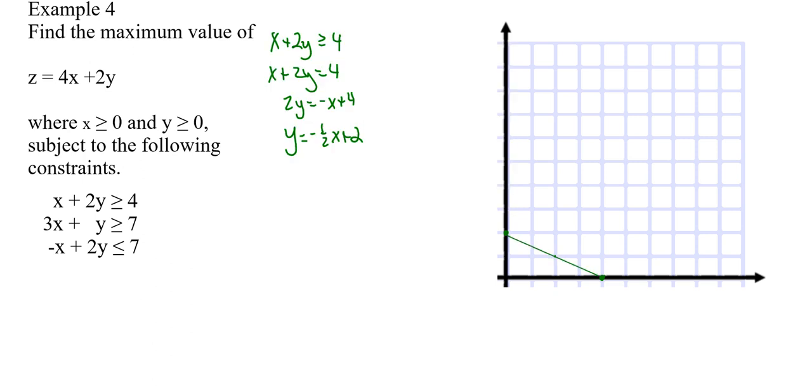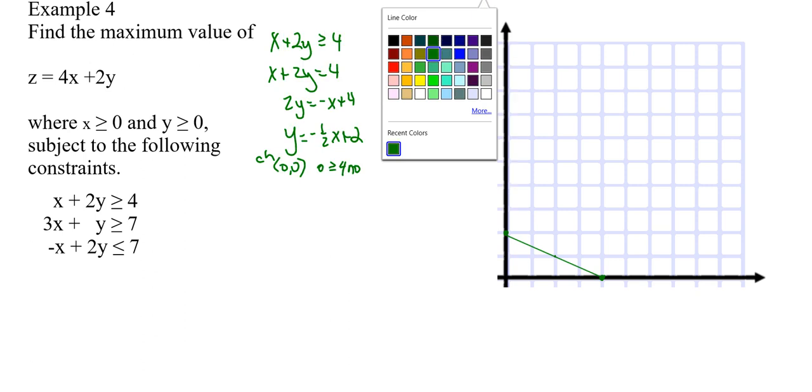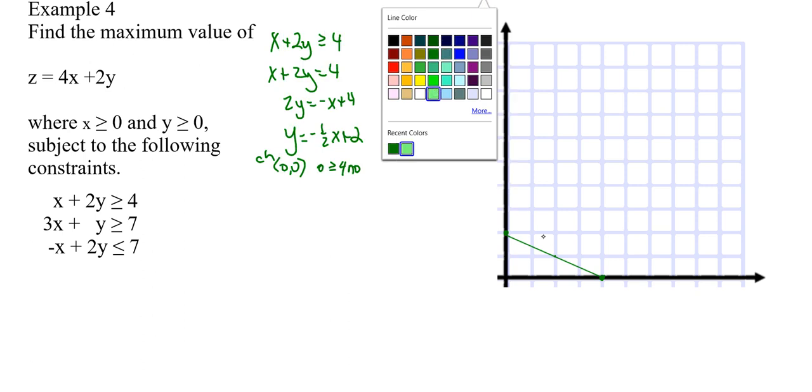If I try my favorite point, which is (0, 0), because it doesn't cross there—just FYI, if it does hit the origin, I can't use (0, 0) as a point to check. I put it in the original: is 0 greater than or equal to 4? No. So this is going to be shaded out to the right and up.